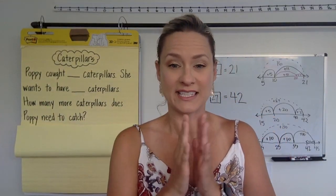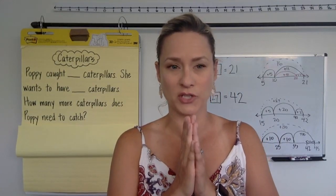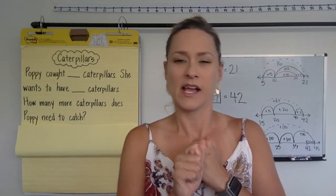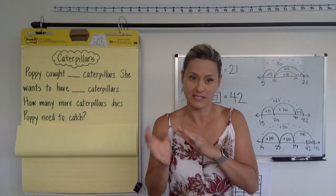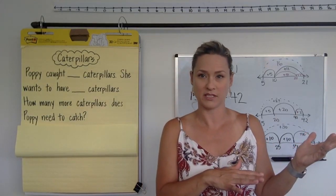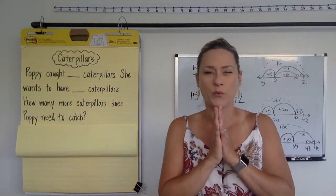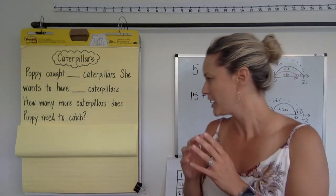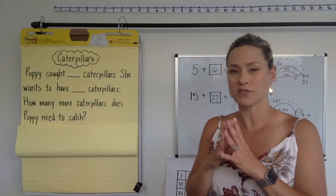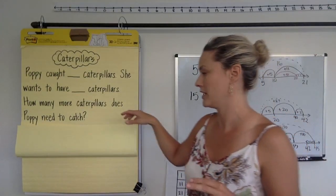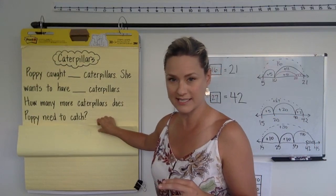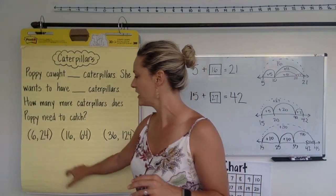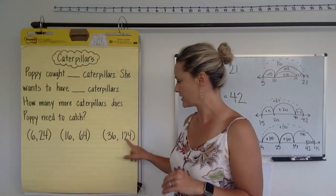Okay. So, let's see. We know for sure that Poppy caught some caterpillars in the beginning. And we know in the end she wants to have a certain number of caterpillars. But we have to figure out how many more she needs to catch. So, remember, our just right number sets are now written on the poster. They're not on little stickies. So, I'm going to show you again, and I'm going to explain how you would do this.